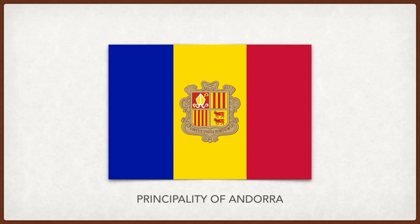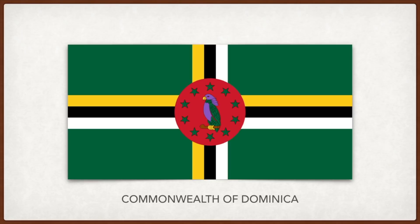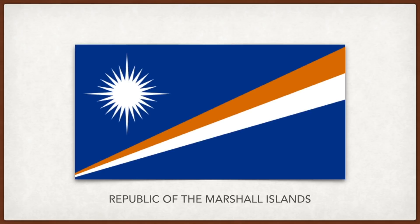Dominica: green is for the forest, the red disc for socialism; the ten stars represent the ten parishes; the yellow is for the natives, white is for Europeans, and black is for Africans — the colors also represent fruit, rivers, and rich soil. The Marshall Islands: the two stripes together are for the equator; growth and vitality are represented by the growing width of the stripes; and the 24-pointed star represents the municipalities that make up the country.